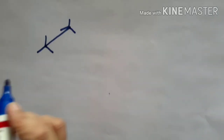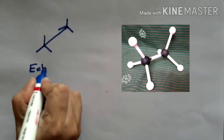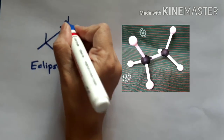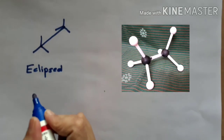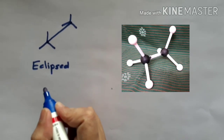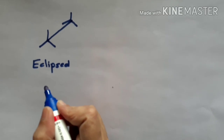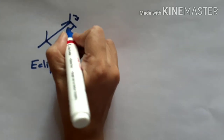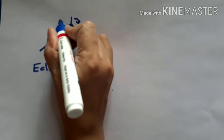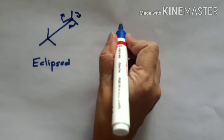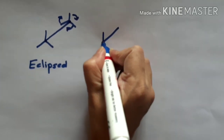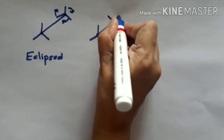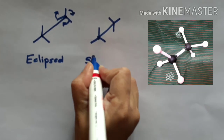This is the eclipsed conformation, where each bond faces each other. We can draw the staggered conformation by rotating the back carbon by 60 degrees like this, giving a new conformation which is called the staggered conformation.